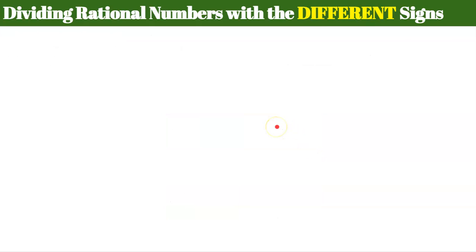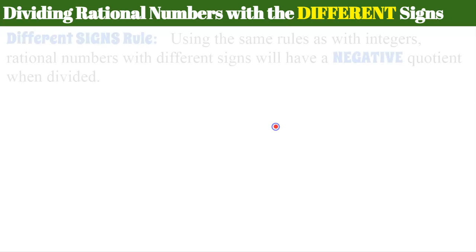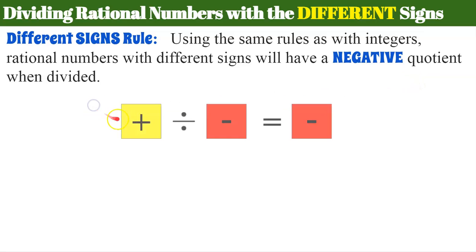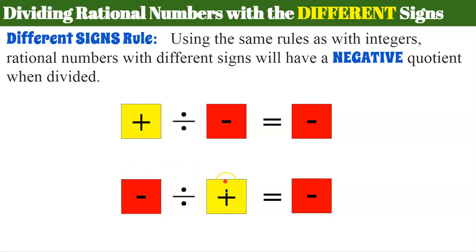Let's talk about dividing rational numbers with different signs. The different signs rule states that, using the same rules as we did with integers, rational numbers with different signs will have a negative quotient when divided. So if we have a positive value divided by a negative value, it equals a negative quotient. If we have a negative value divided by a positive value — negative quotient. Two different signs, positive and negative — negative quotient. Two different signs, negative and positive — negative quotient.